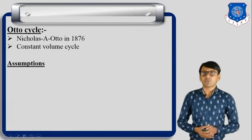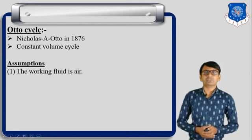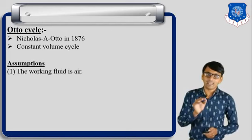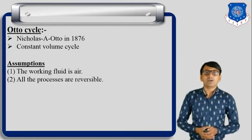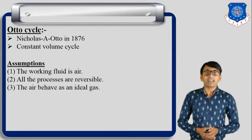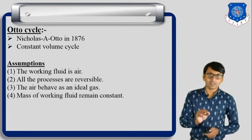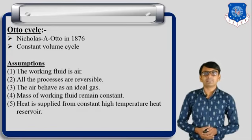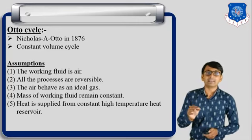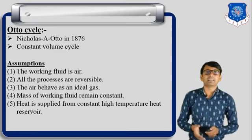Before starting the Otto cycle, we assume some points. First, the working substance is air. Second, all the processes are reversible. Third, the air behaves as an ideal gas. Fourth, mass of working substance remains constant throughout the cycle. Fifth, heat is supplied from a constant high temperature heat reservoir.